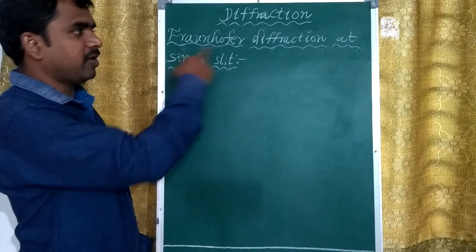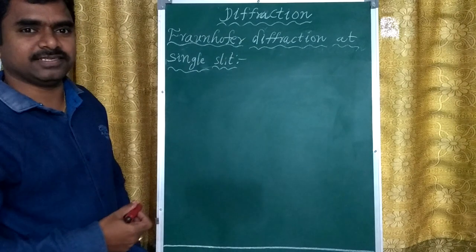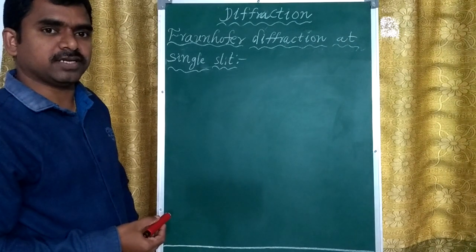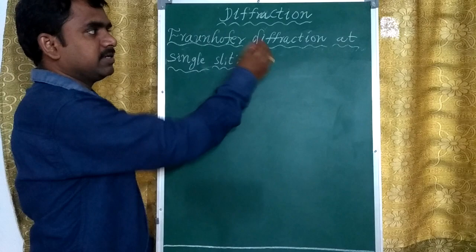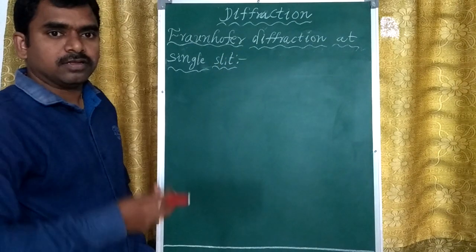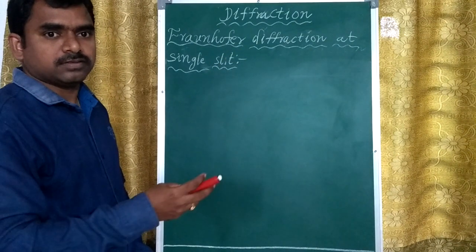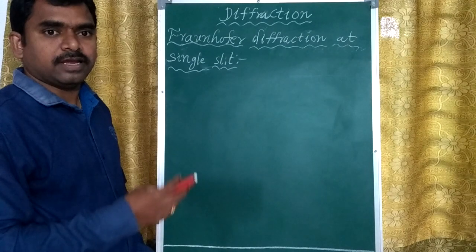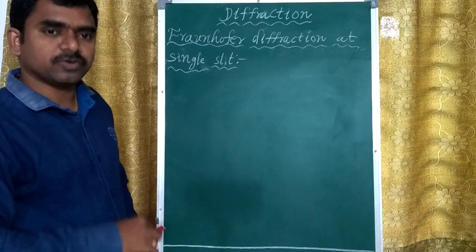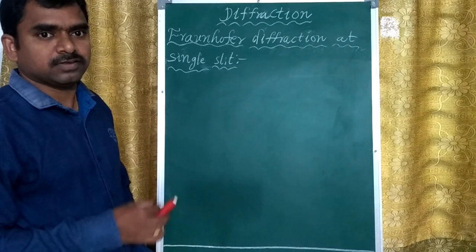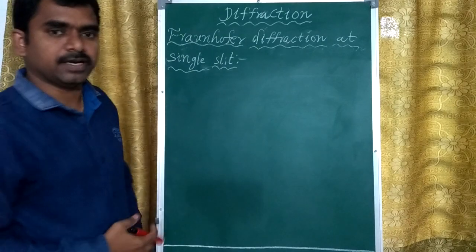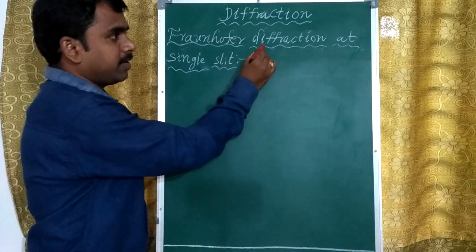Today's class is Fraunhofer diffraction at a single slit. Diffraction is the bending of light waves when they reach any obstacle, which is why we observe light in the shadow region. In Fraunhofer diffraction, the source and screen are at infinite distance, the wavefront is a plane wavefront, and we use a converging lens to focus the beam.